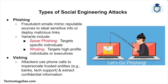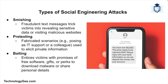Social engineering attacks come in various forms. The first is phishing, which involves sending fraudulent emails from apparent reputable sources to trick recipients into divulging sensitive information or clicking malicious links. Variants include spear phishing, which targets specific individuals, and whaling, which targets high-profile individuals or executives. Vishing, or voice phishing, uses phone calls to deceive individuals into providing confidential information, with attackers impersonating banks, technical support, or other trusted entities.